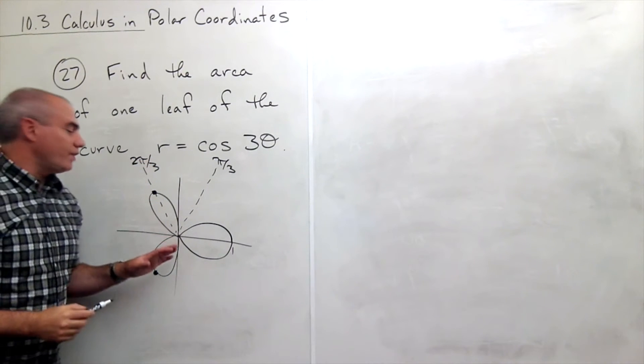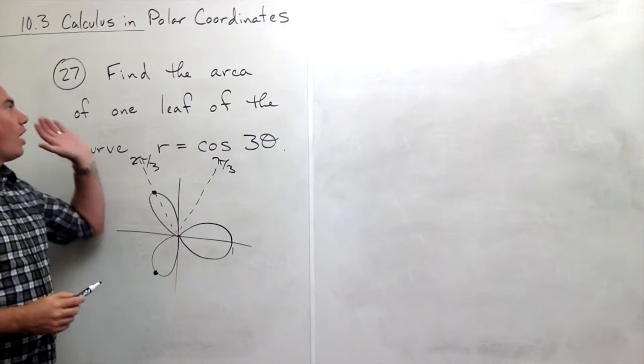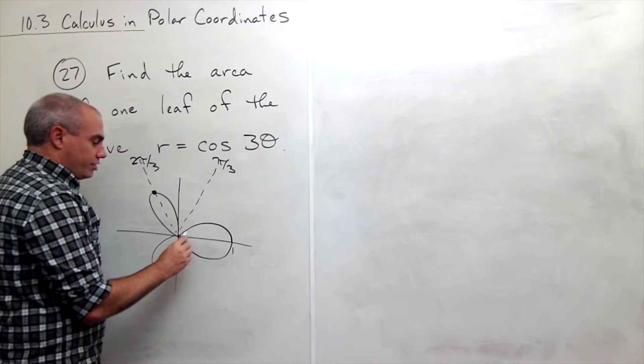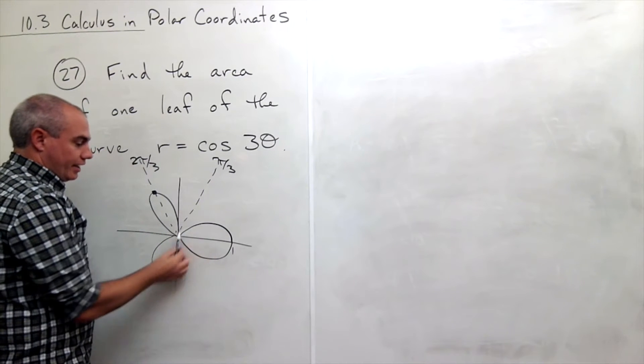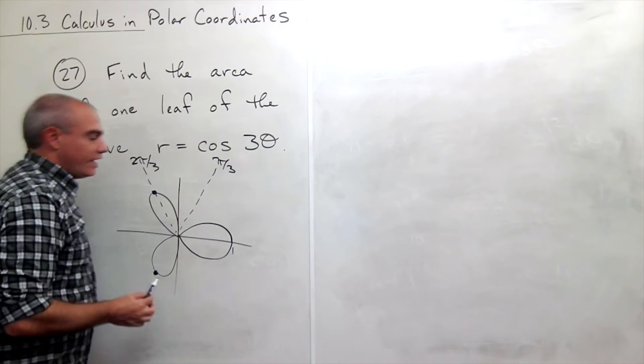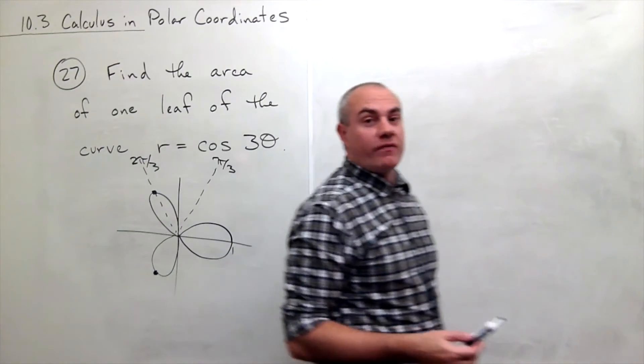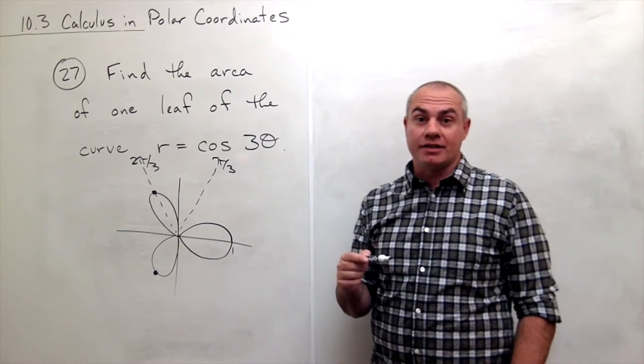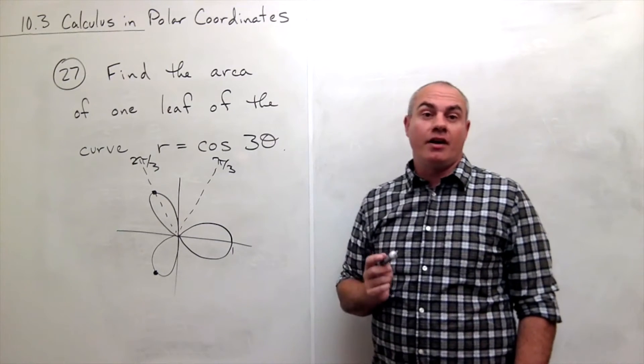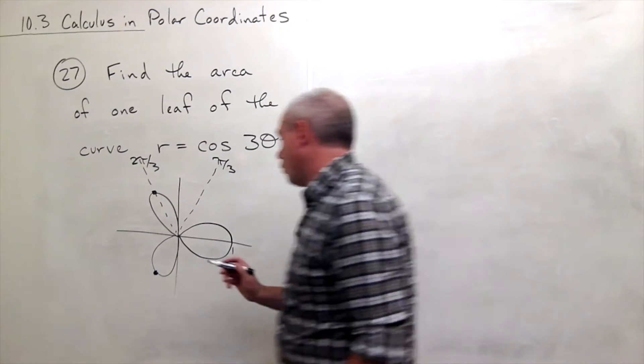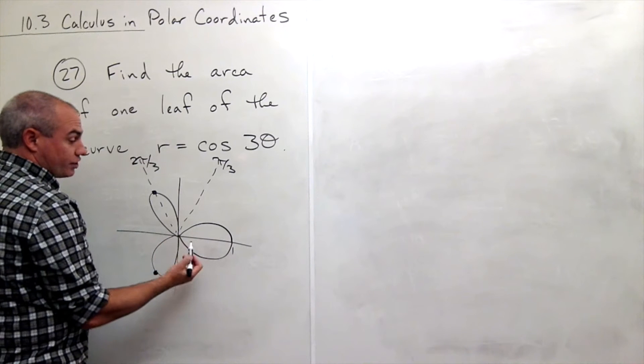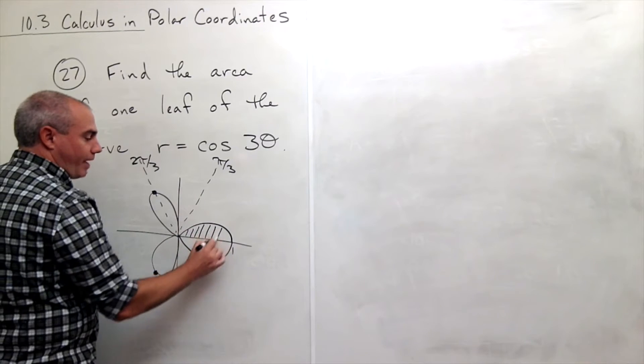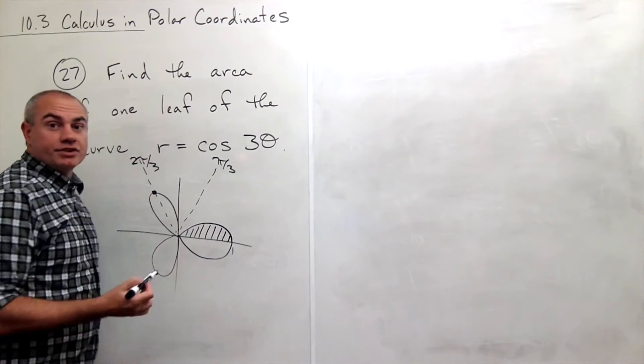So we start to get a feel for how this curve looks. Now I just want to find the area in one leaf. I'm good just finding the area in this one leaf that's sitting right here and in fact I'm okay with just finding the area in the top half of that leaf and then doubling it because this is a symmetric leaf about the x-axis. So I want to find the area of the total leaf that's sitting here but I'm just going to find the area of the top half of that leaf and then I'll double that area.